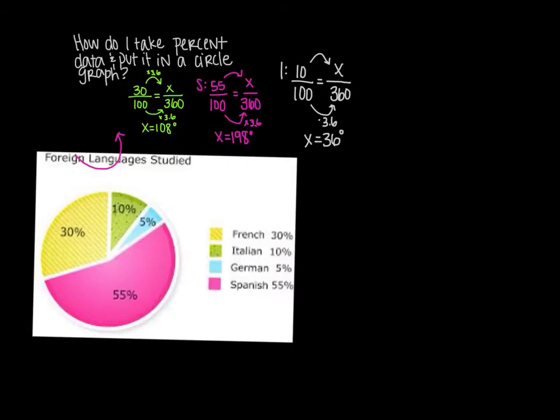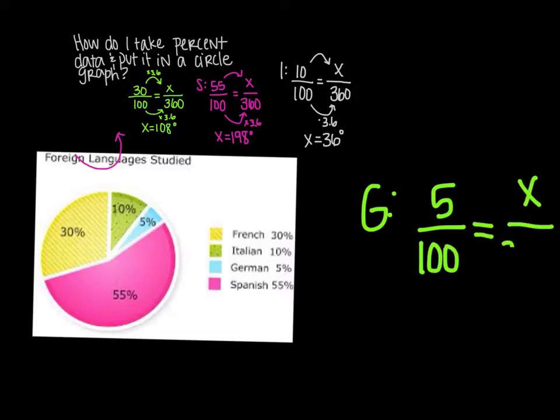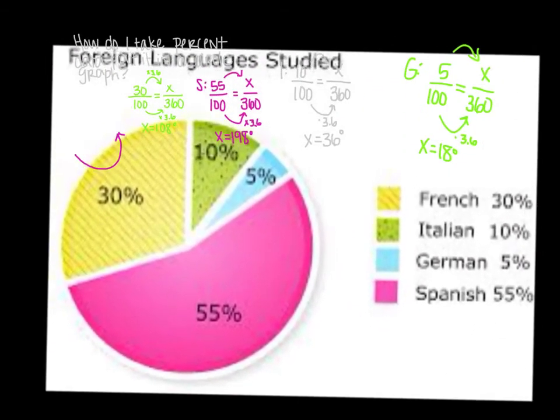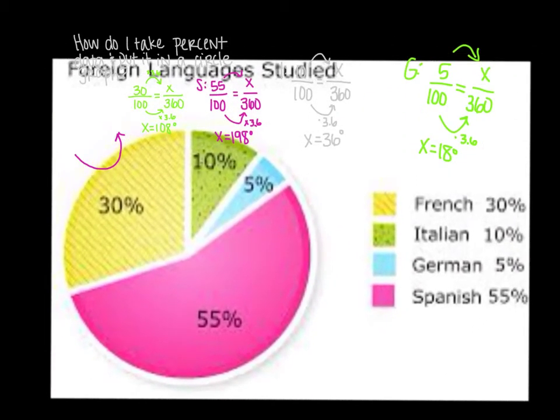And last but not least, we have the German at 5%. So 5 out of 100 equals x out of 360. Going from 100 to 360, I multiply by 3.6. Do the same thing. 5 times 3.6 is 18. So it is 18 degrees. I just want to take a second to show you this a little bit closer up. Please notice that there are no spaces. Even though it kind of looks like it in this table, there's actually no spaces. Everything is butted up next to each other. And they started at zero when they measured this.